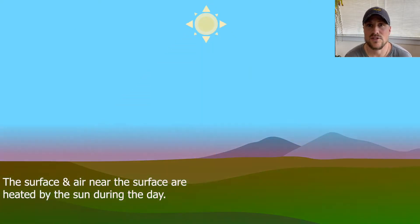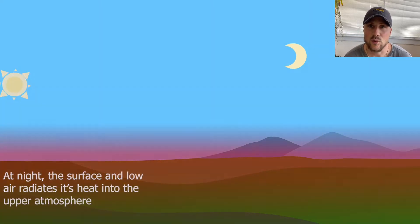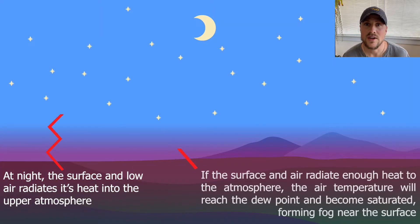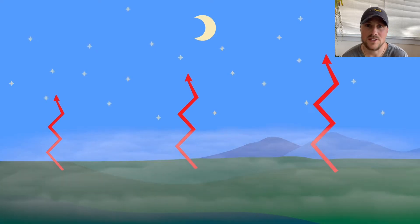Ground and air near the surface is warmed by the sun during the day. At night, the heat radiates into the upper atmosphere. If this radiation is enough, the air will become saturated when the temperature lowers to the dew point and fog will form.